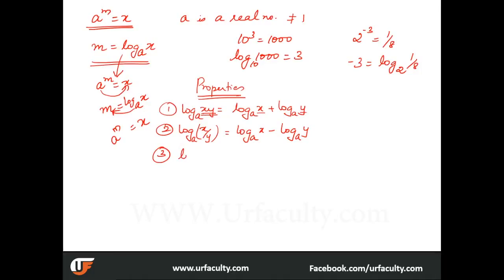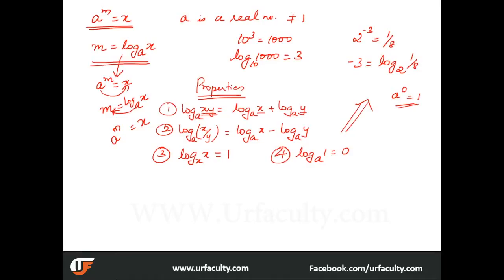The next property is very important: log x to the base x is equal to 1. And another important one: log 1 to the base a is equal to 0. This is because a to the power of 0 is equal to 1 — anything to the power of 0 equals 1 — and that's what this property represents.